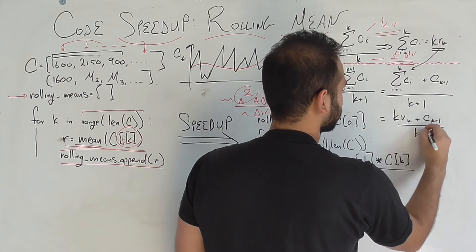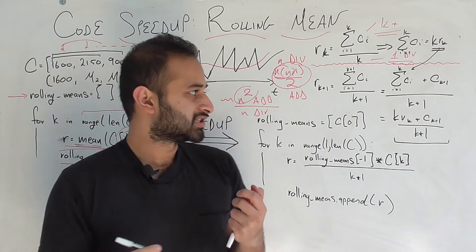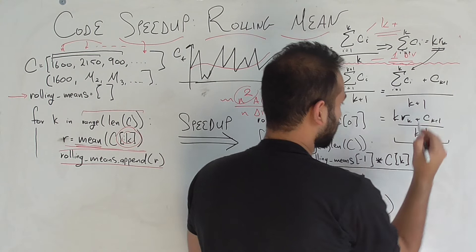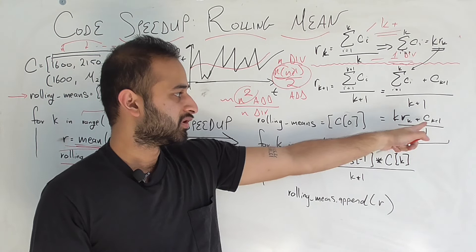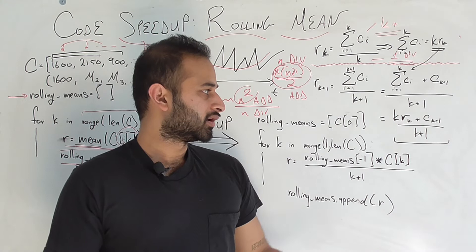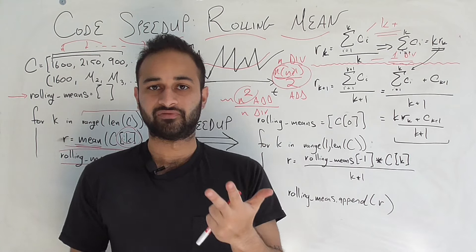Now, this doesn't seem like I did anything that crazy, but we just did a very insane thing for our optimization. If you look at this formula here, this is a k, this is an r. In order to find the rolling mean for any given day, you only need to take the rolling mean from the previous day, do a single multiplication by the number k, add the new calorie value you have, and divide that whole thing by k plus one. What are we doing here? We're doing one multiplication right here, one addition right here, one division right here.